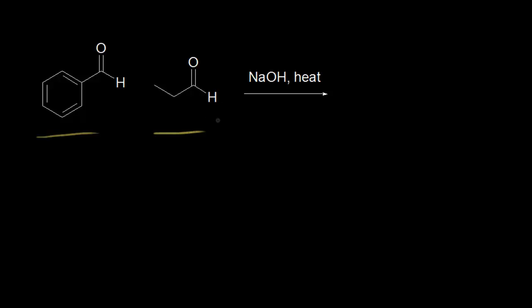We need to figure out what sort of enolate anion we're going to form. When we add sodium hydroxide as our base, what is going to be our enolate anion? To do that, we need to look for alpha carbons. Starting with propanal, the alpha carbon is the one next to the carbonyl — right here — and there are two alpha protons on that carbon. The aldehyde hydrogen is not going to form an enolate, so we don't have to worry about the right side of our aldehyde.